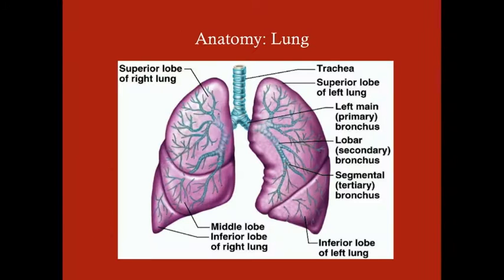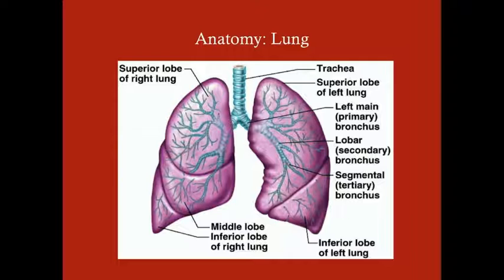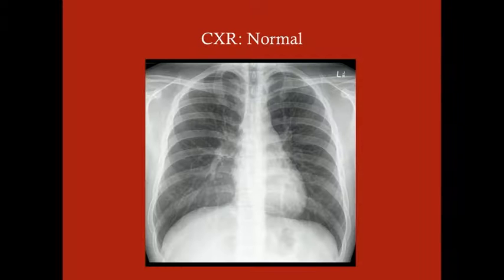Here's the anatomy of the lung. On the right side we have three lobes; on the left side we have two. The trachea comes down and breaks into the left and right primary bronchi. At the level of the lobes, the main stem bronchi split into lobar bronchi, and at the level of the segments they split into segmental bronchi, also called tertiary bronchi.